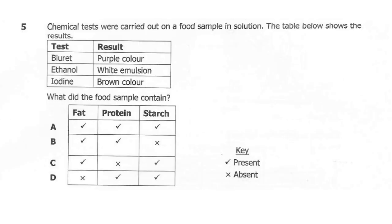Question 5. Chemical tests were carried out on a food sample solution. The table below shows the results. What is the correct answer? Is it A, B, C, or D?